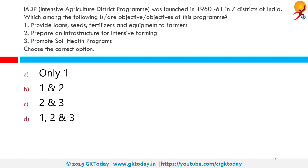The IADP, or Intensive Agricultural District Programme, was launched in 1960-61 in seven districts of India. What were the objectives? 1. Provide loan, seed, fertilizer and equipment to farmers. 2. Prepare an infrastructure for intensive farming. 3. Promote soil health programs. The correct options are one and two. IADP was the first major experiment of the Indian government in agriculture, also known as the package program as it was based on the package approach.